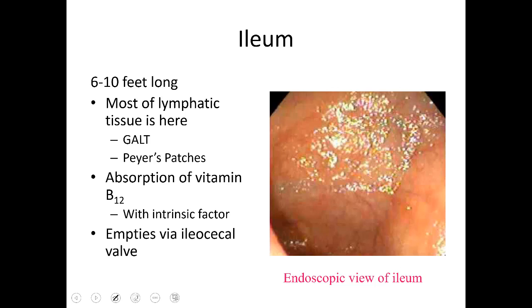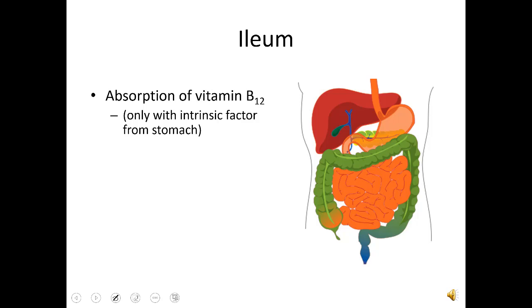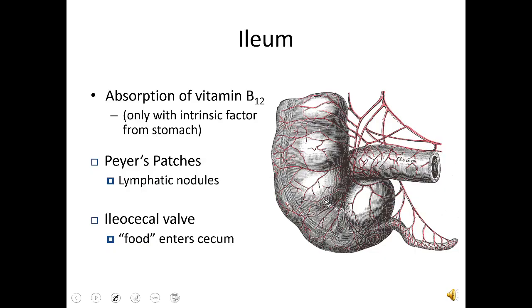The end of the small intestine terminates at the ileocecal valve — 'ileo' meaning ileum, and 'cecum' meaning the part of the large intestine the food is emptied into. The terminal portion of the small intestine, the ileum, butts up against the cecum, which is a pouch and the first portion of the large intestine. The ileocecal valve is a one-way valve because the bacterial environment of the small intestine is very different from that of the large intestine.